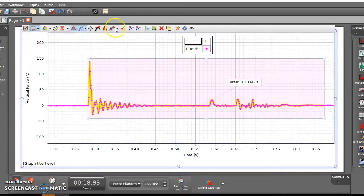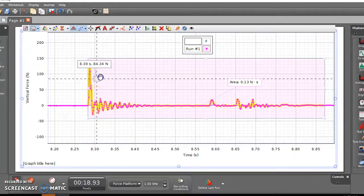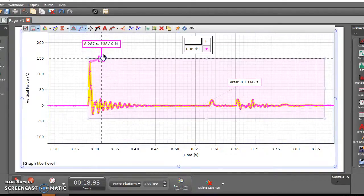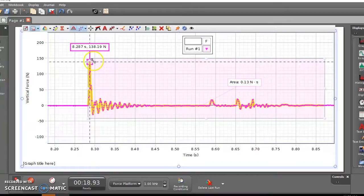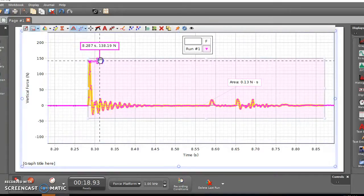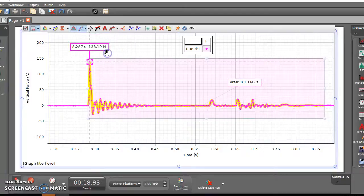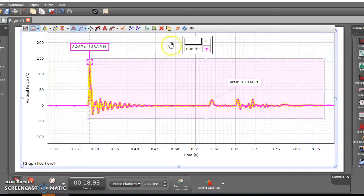Using this tool right here, we can add a coordinate, and you can drag it and use it to figure out what the maximum force was. So in this particular example, my maximum force was 138 newtons. You can get that value, and then you also get that area.